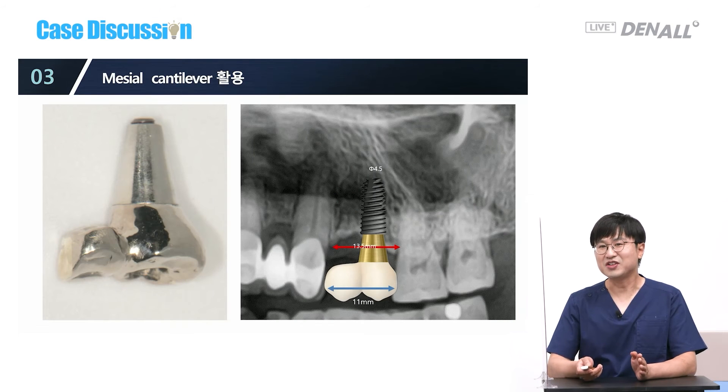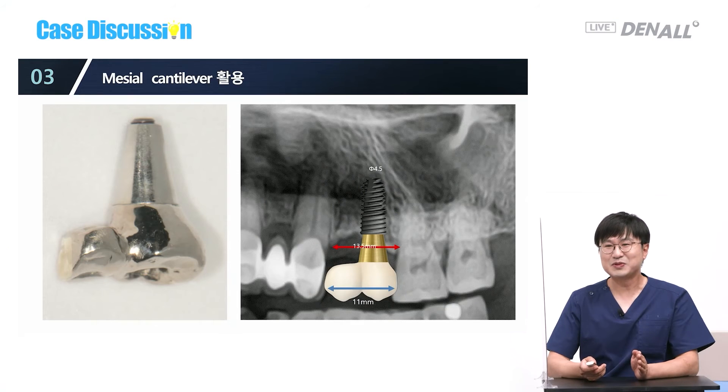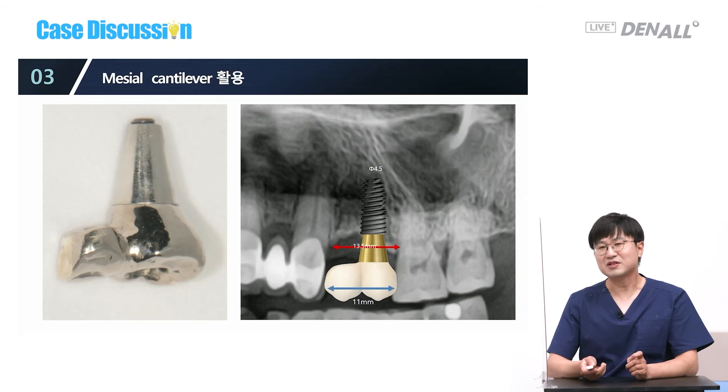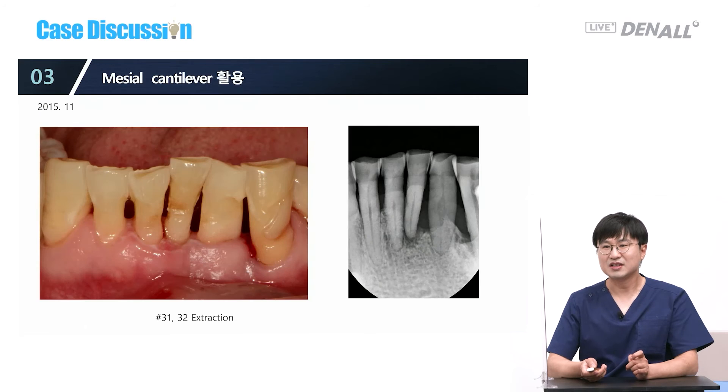Two narrow fixtures placed in a narrow space with rigid abutments connected gives enough space for the gap between the teeth. Regarding the mesial cantilever: I don't have a lot of experience with it. My excuse is that it is mechanically unfavorable, but the actual reason is that when I try to place an implant considering the cantilever space, I still end up placing it in the middle. I believe cantilever prosthesis is mechanically weak and it is difficult to place an implant on one side of the space.